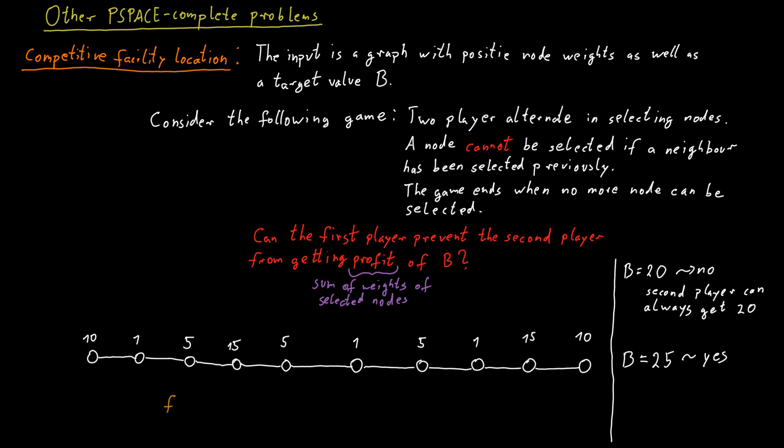And here's one way of doing this. The first player can first pick this vertex with weight 15. Now the second player can choose any vertex that's not that vertex or a neighbor of it.